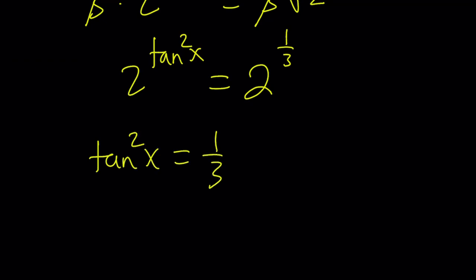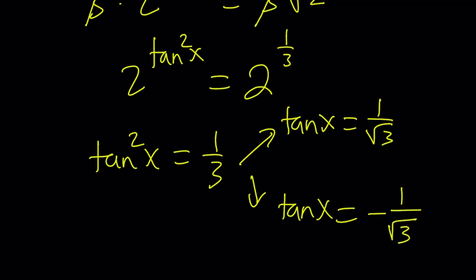So this implies tangent squared x equals one third. And that's really nice because we can solve this equation, right? Well, if tangent squared is one third, there are two results. Either tangent x is the square root of one third, which can be written as one over square root of three, or it is equal to negative one over square root of three. Awesome.